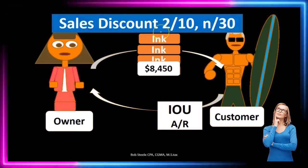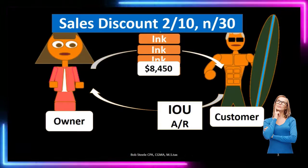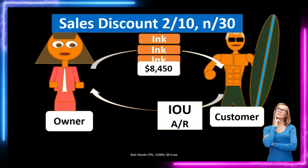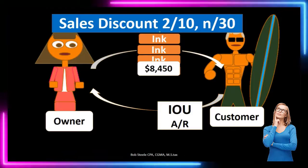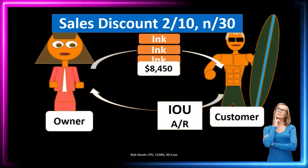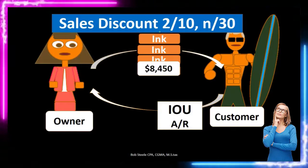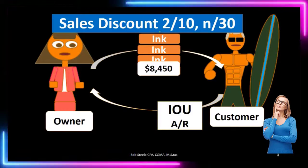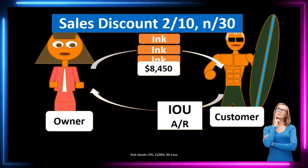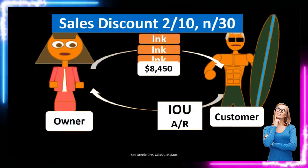When we put this transaction on the books, we may have terms that look something like 2/10 n/30, meaning a 2% discount if the customer pays within 10 days. Otherwise, we want payment within the normal terms of 30 days.